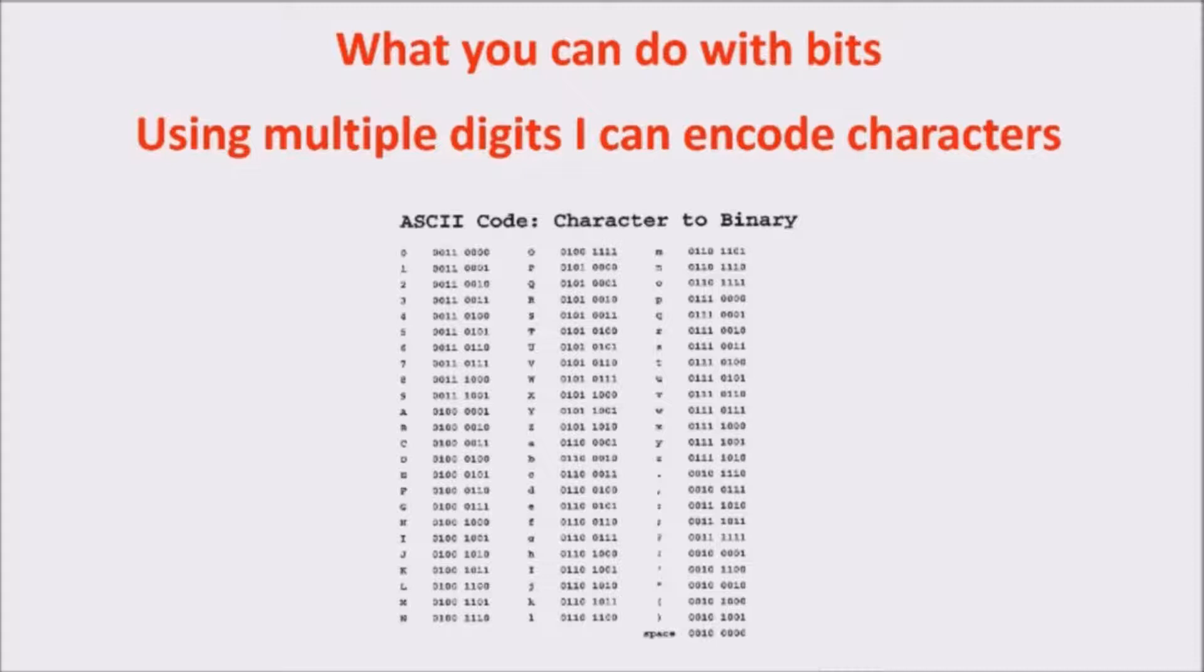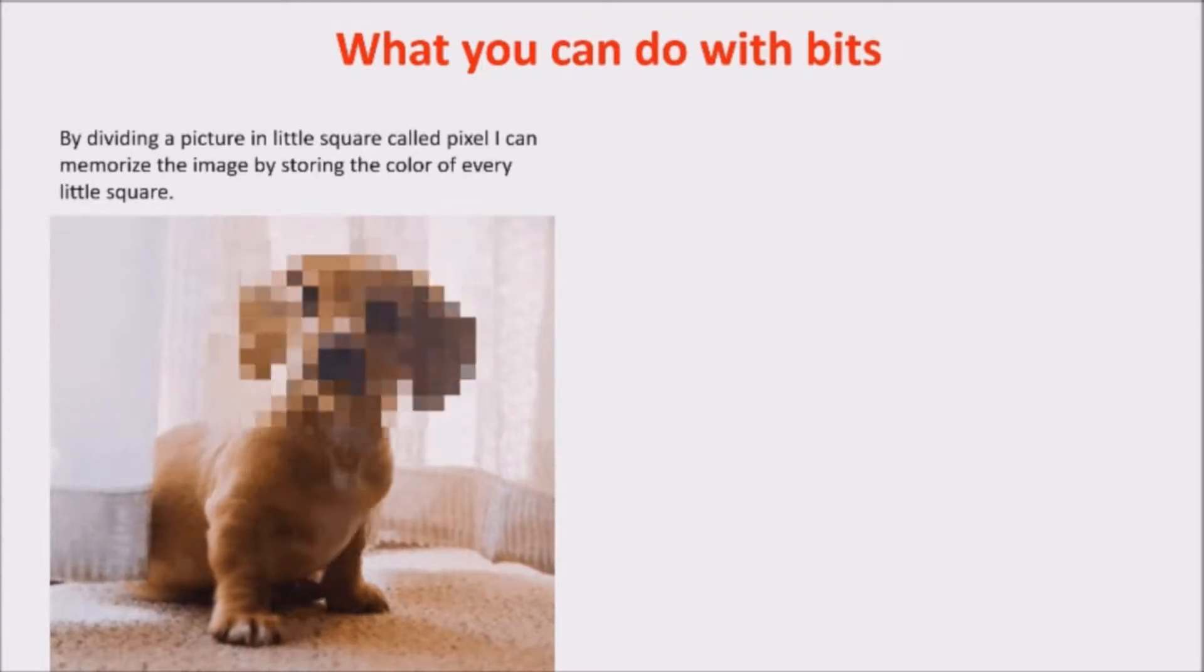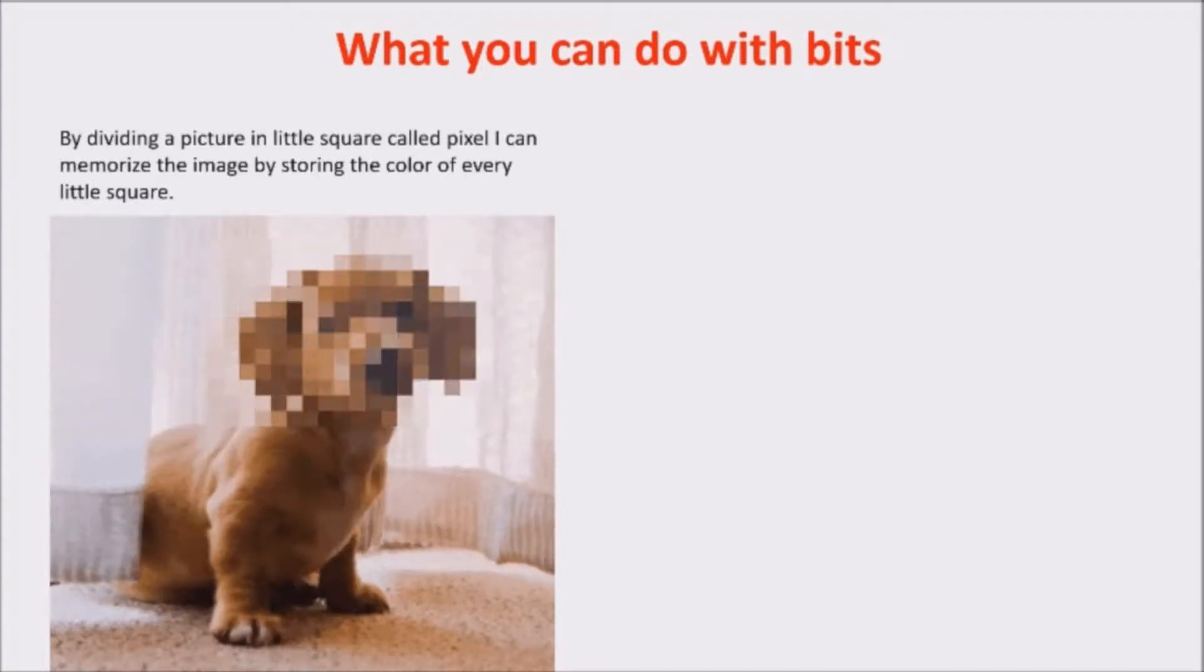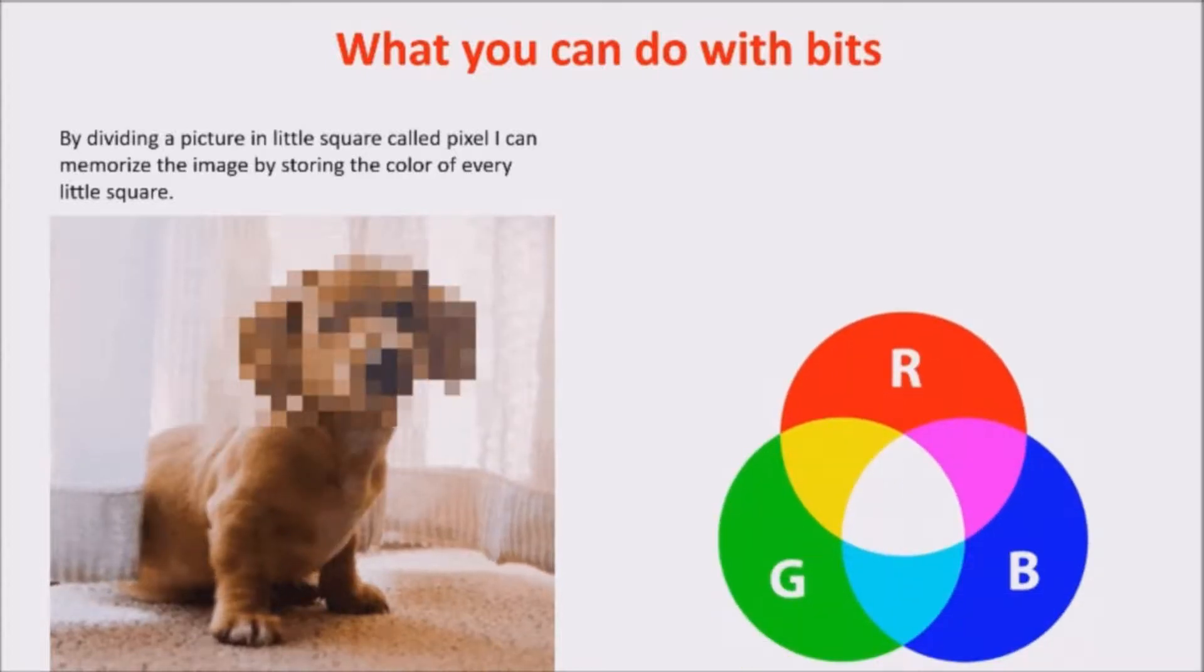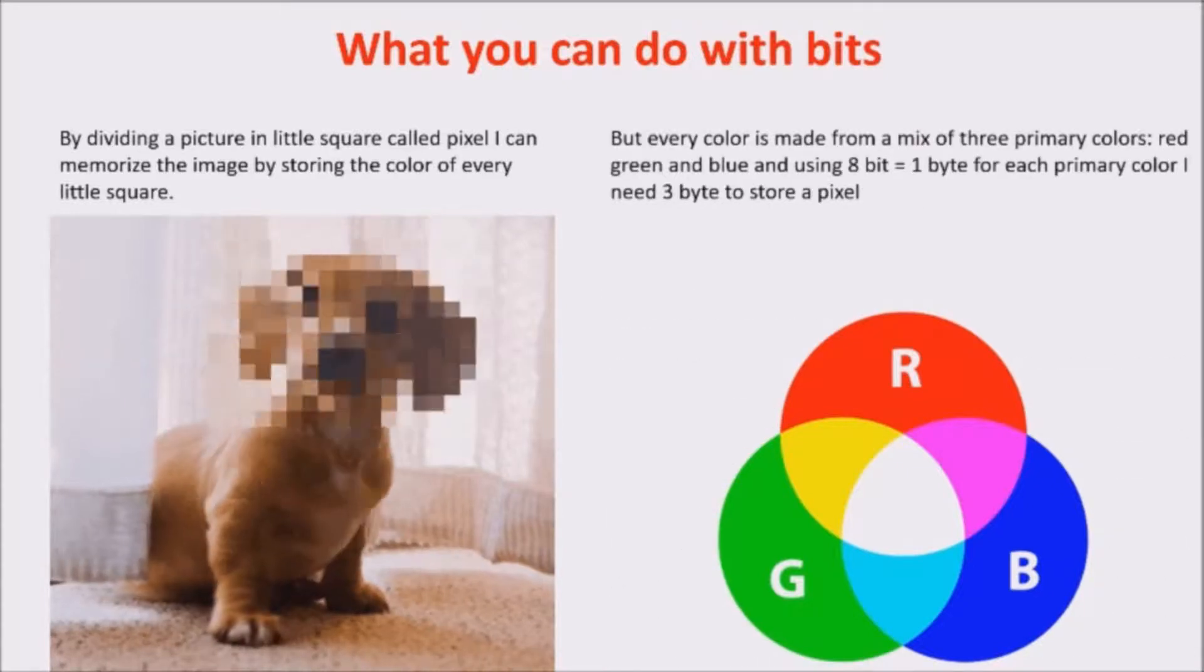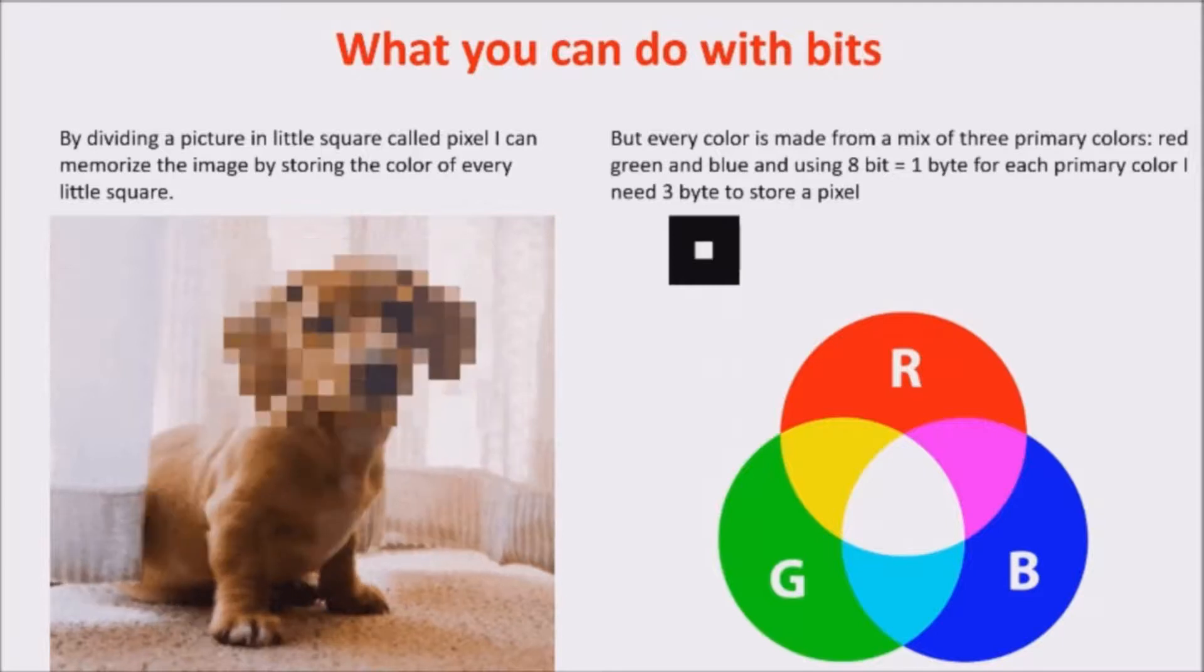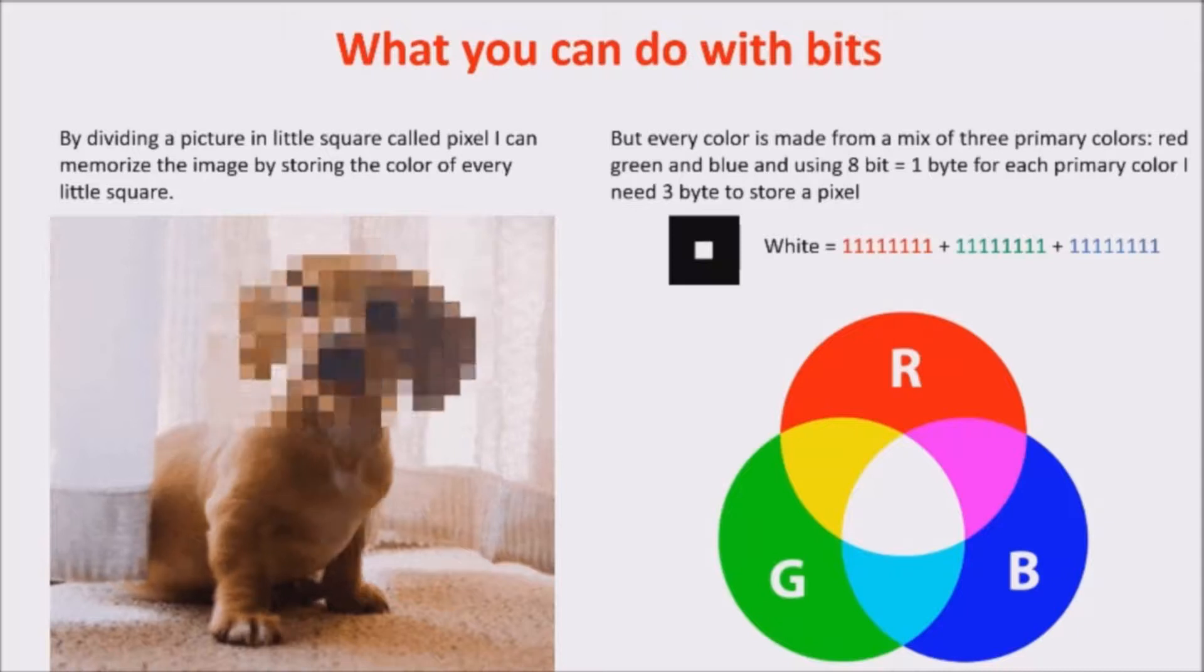Another thing you can do with bits is managing pictures. You can divide a picture in tiny little squares and represent the color of the little square with its own three primary colors: red, blue and green. Each one with a gradation represented by 8 bits. So, with different gradation mix of the primary colors, you can represent every shade. For example, the white is represented by 8 ones for the red, 8 for the green and 8 for the blue.